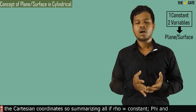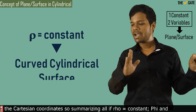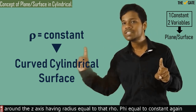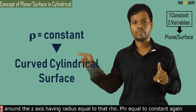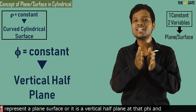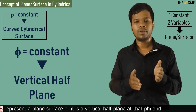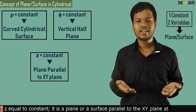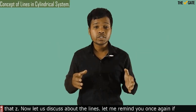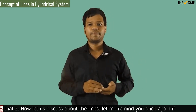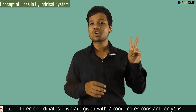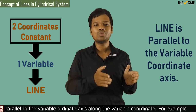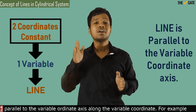Summarizing: if rho equal to constant and phi and z are variables, it represents a curved cylindrical surface around the z-axis having radius equal to that rho. Phi equal to constant represents a vertical half plane at that phi. Z equal to constant is a plane parallel to the xy-plane at that z. Now for lines: if two out of three coordinates are constant and only one is variable, that represents a line parallel to the variable coordinate axis.